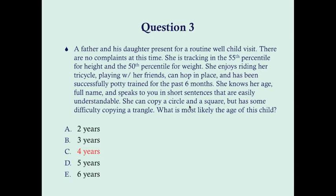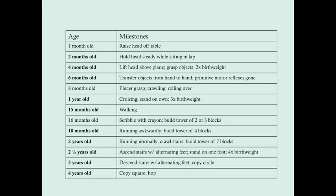Copying shapes is a fine motor skill. A circle should be able to be copied by three years of age, a square by four years of age, and a triangle by five years of age. So: circle at three, square at four, triangle at five — making this most likely a four-year-old child.